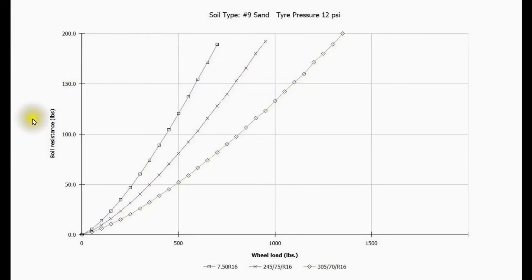And here we have the soil resistance for the very weak sand, again at the reduced tire pressure. And the resistance curves follow the same characteristics as the sinkage curves. We get much higher soil resistances and the skinny tire always performs worse than the fatter tires.